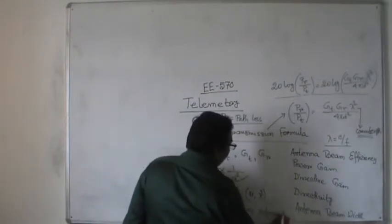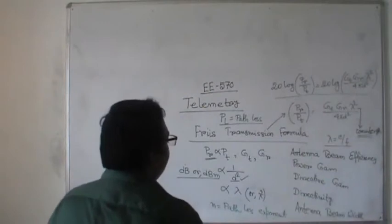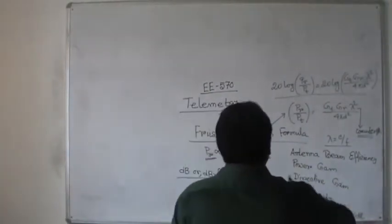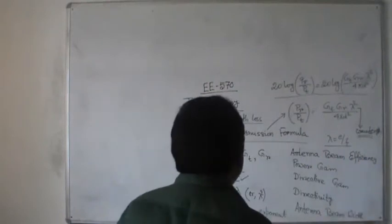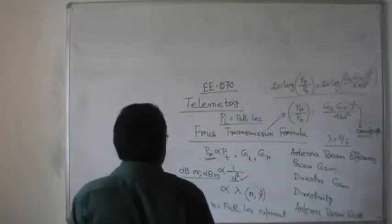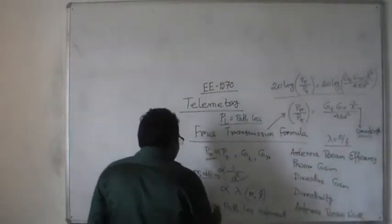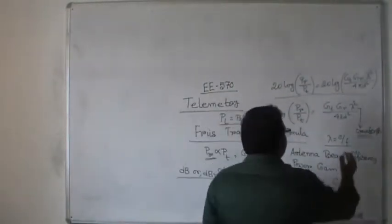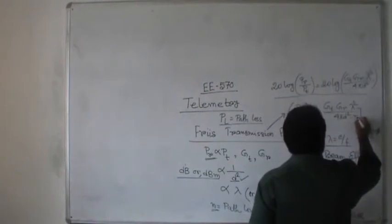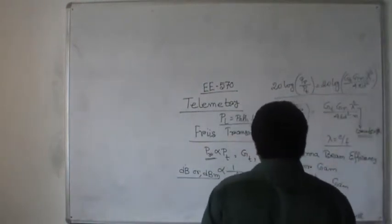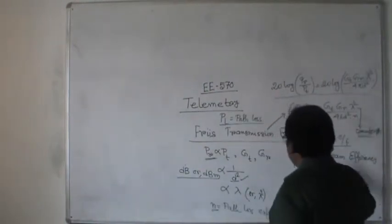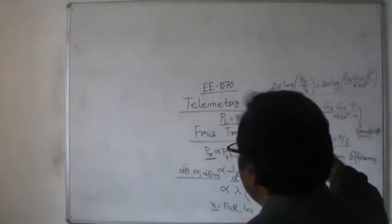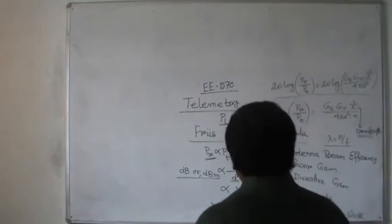Whenever we get the power, we observe it in a curvilinear fashion in the form of an exponential type. So we can say that depending on this path loss exponent, which appears as small n, if the value of the path loss exponent is higher, then the ratio PR/PT will be much lower.